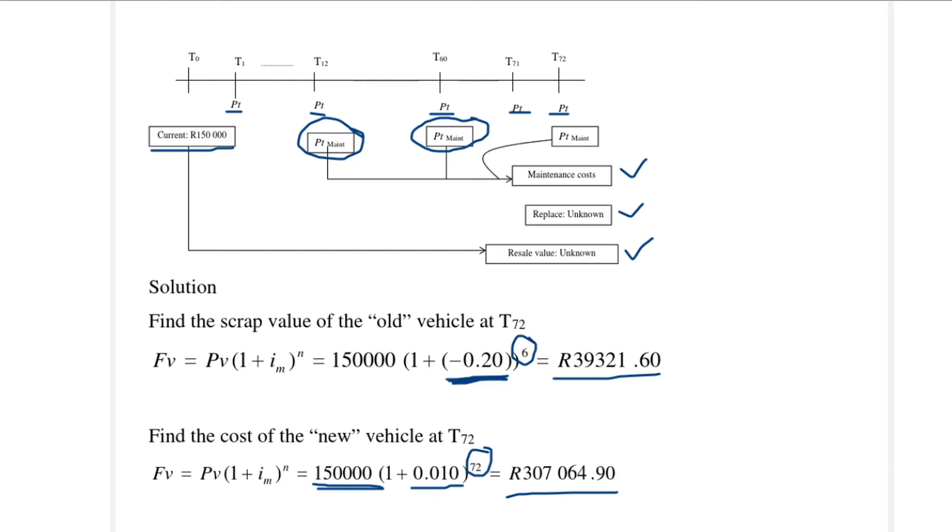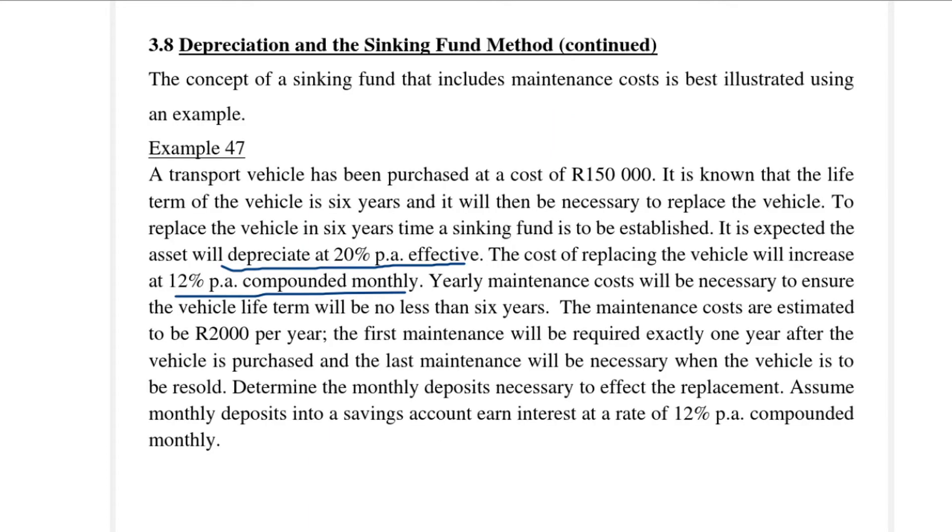The maintenance cost is estimated at 2,000 rands per year into an account that earns interest at the rate of 12% per annum compounded monthly. We are in effect working with a complex annuity here because the payments are made on an annual basis but the interest rate is compounded monthly. So when we have something like that, we first need to change the compounding period to be the same as the payment period.